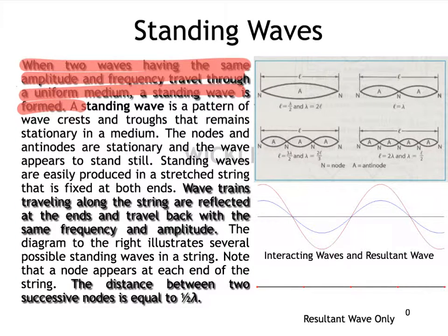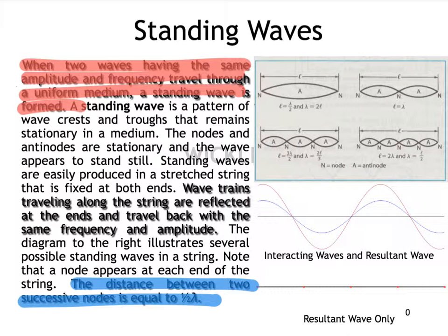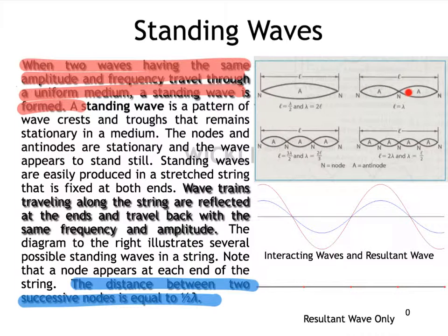There is a certain defined distance between successive nodes: the distance between two successive nodes is always going to be half of a wavelength. In the first example, here's a node and here's another node — this distance is half a wavelength because you can see this is only half of a cycle. The whole cycle would continue like a sine wave. You can see that process continue in the larger-node diagrams as well.